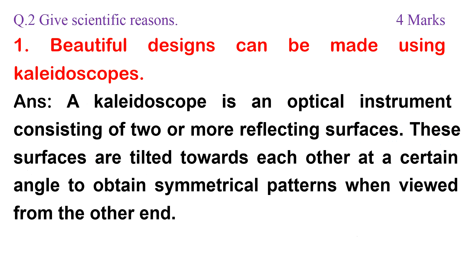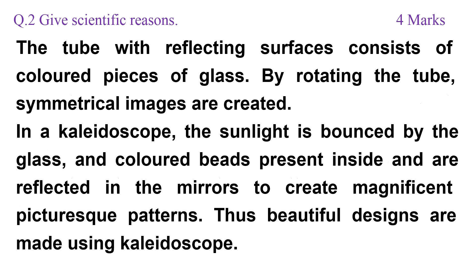1. Beautiful designs can be made using kaleidoscopes. Answer: A kaleidoscope is an optical instrument consisting of two or more reflecting surfaces. These surfaces are tilted towards each other at a certain angle to obtain symmetrical patterns when viewed from the other end. The tube with reflecting surfaces consists of colored pieces of glass. By rotating the tube, symmetrical images are created.